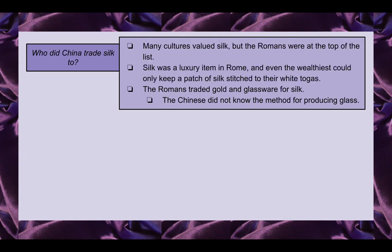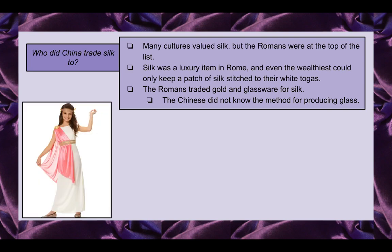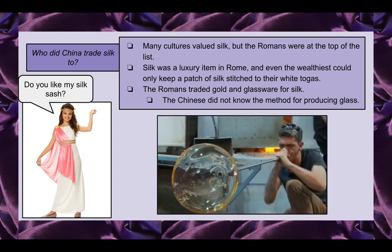Who did China trade silk to? Many cultures valued silk, but the Romans were at the top of the list. Silk was a luxury item in Rome, and even the wealthiest could only keep a patch of silk stitched to their white togas. The Romans traded gold and glassware for silk, and since the Chinese didn't know the method for producing glass, glassware would have been very desirable to them.